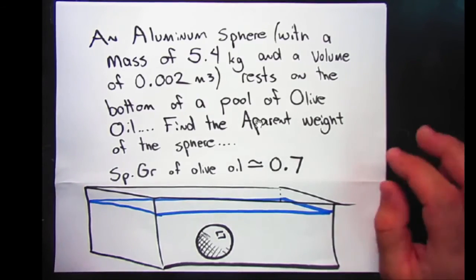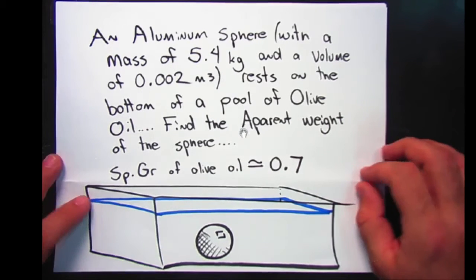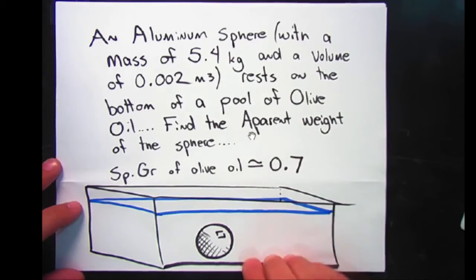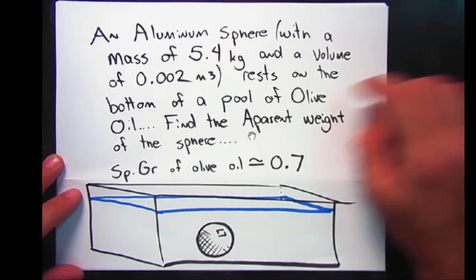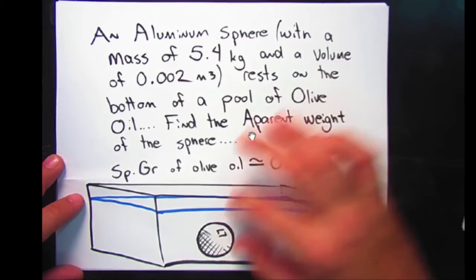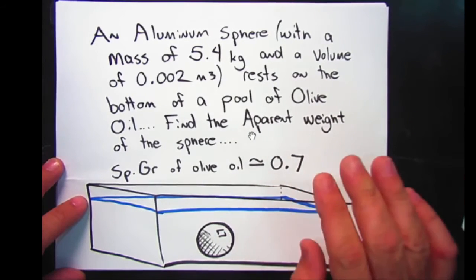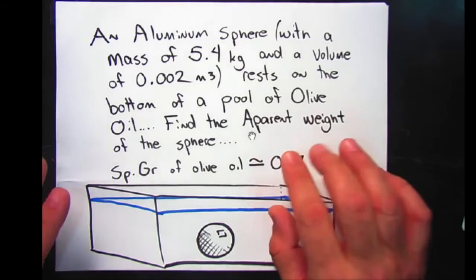Okay, here's our first complicated problem that ties together multiple things from this unit. Let's imagine we have an aluminum sphere resting on the bottom of a pool of olive oil. It's the same mass of aluminum that we had before and the same volume of aluminum, but this time it's a sphere. The specific gravity of olive oil is 0.7. So, let's see if we can put all this information together and try and find the apparent weight.